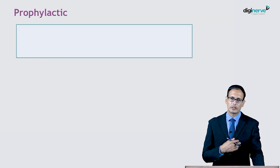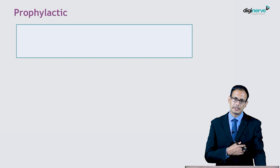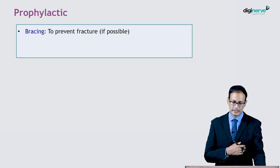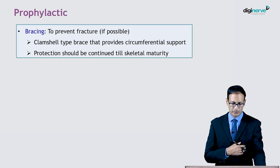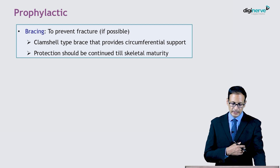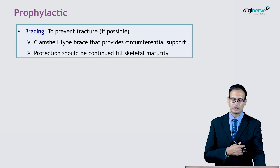What are prophylactic options of treatment in CPT? Bracing is used to prevent the fracture if possible. The clamshell type of brace is generally recommended. The protection should generally be continued till skeletal maturity.